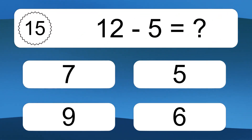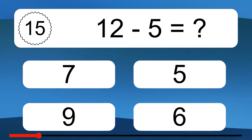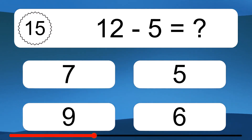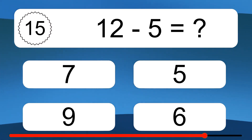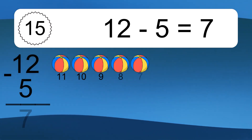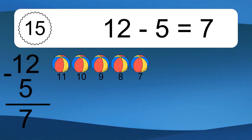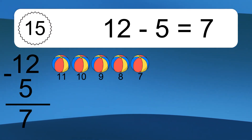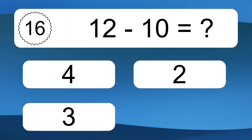12 minus 5 equals what? 12 minus 5 equals 7. Let's count it. 11, 10, 9, 8, 7.